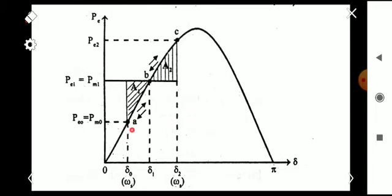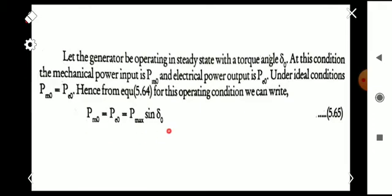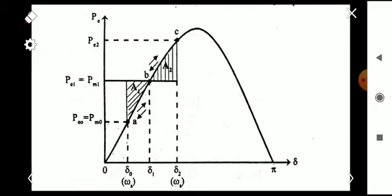Point A on the power angle curve is the steady state operating point, where P = P0 = Pmax × sin(δ₀). The ideal condition assumes mechanical power input equals electrical power output. At this operating point with torque angle δ₀, the rotor speed equals synchronous speed ωs.